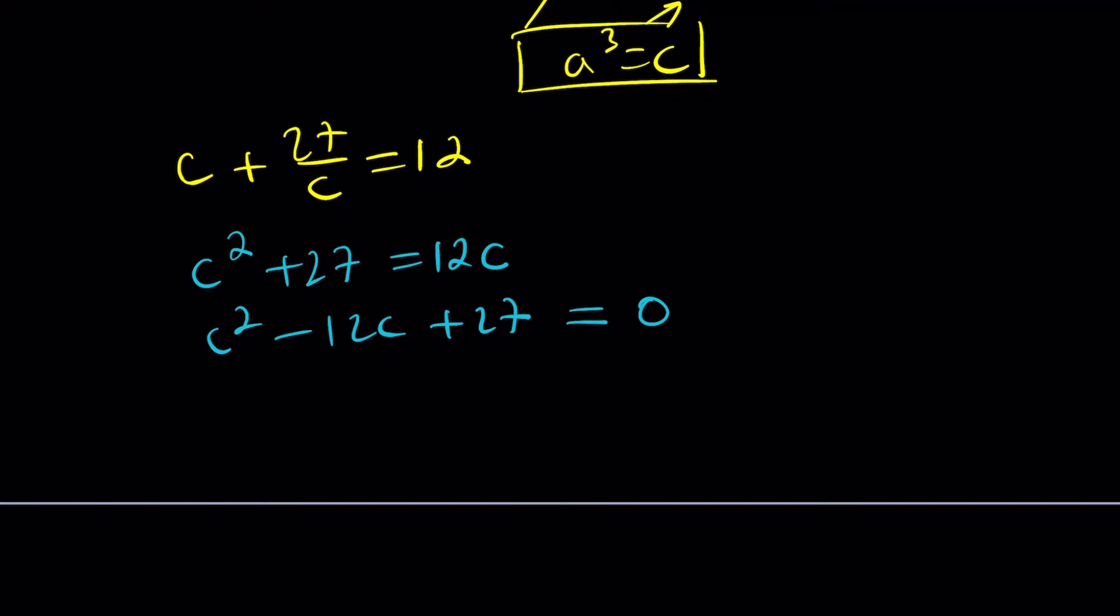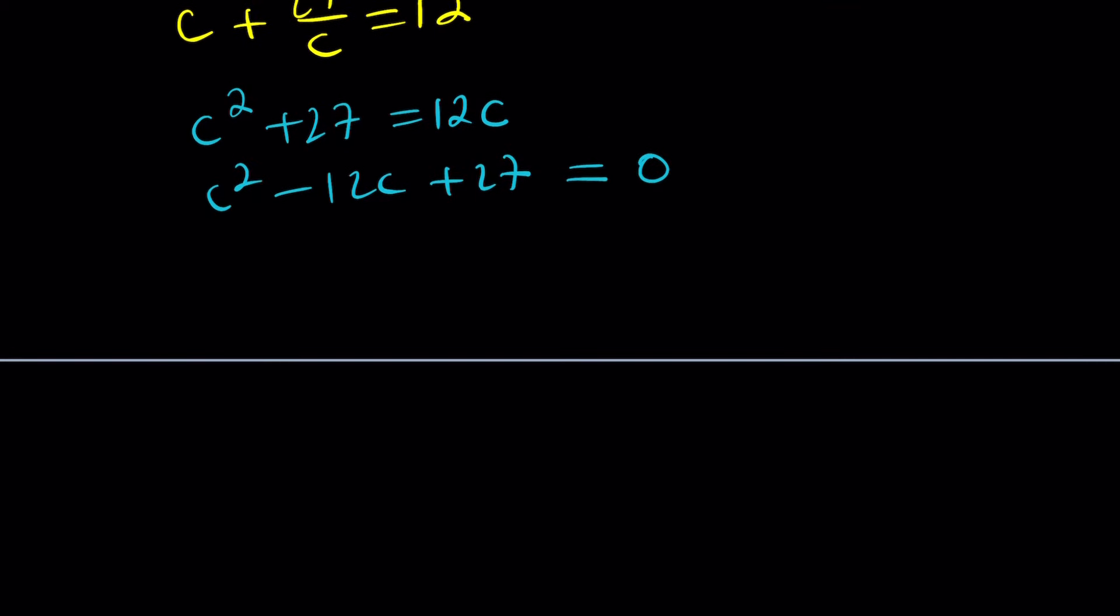Now we can solve for c. Using the quadratic formula: -b ± √(b² - 4ac). That's 144 - 108 = 36. The square root of 36 is 6. So we get (12 + 6)/2 and (12 - 6)/2. This gives us 9 and 3. The c values are integers, which is beautiful and kind of rare.